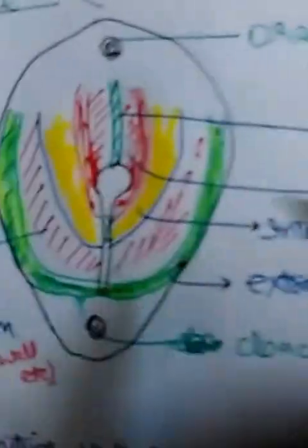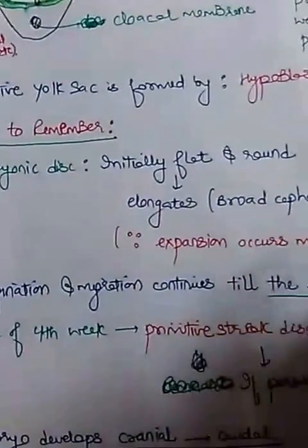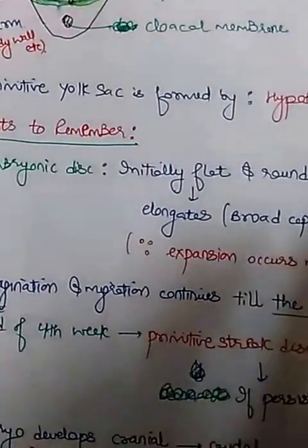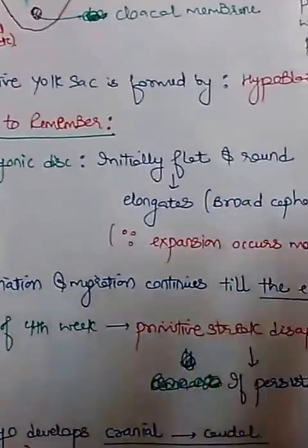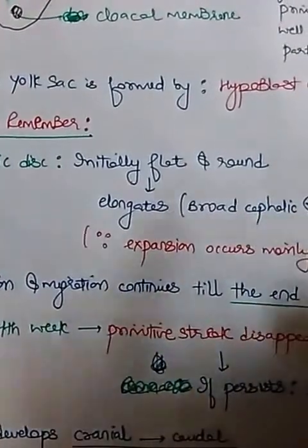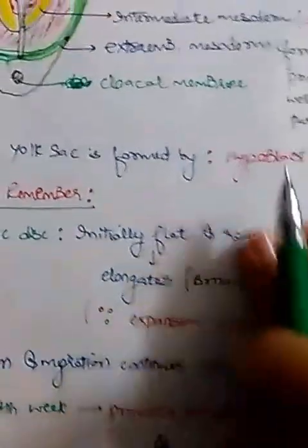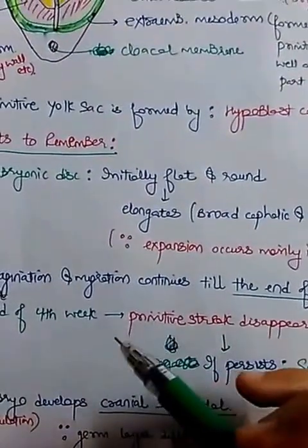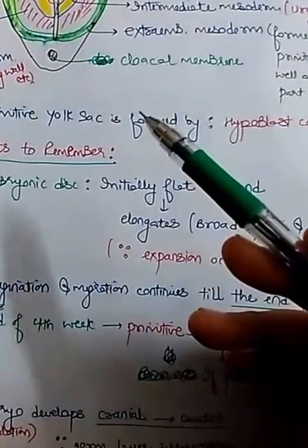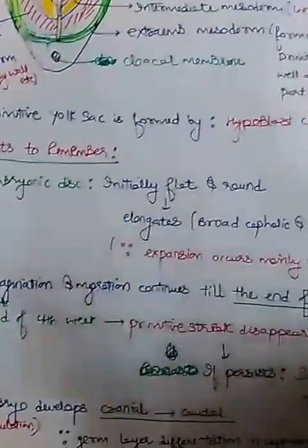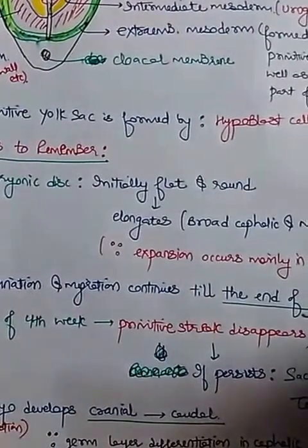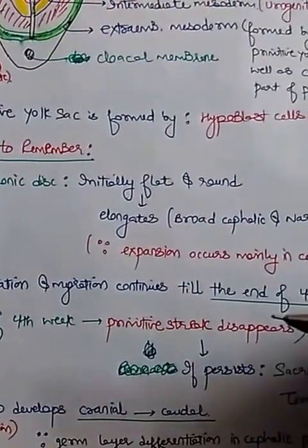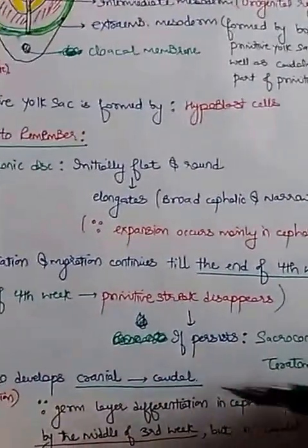The embryonic disc was initially round and flat, but later it elongated and formed a broad cephalic and narrow caudal part, as cells are expanding more in the cranial direction. This invagination and migration of cells continues until the end of the fourth week. At the end of the fourth week, the primitive streak gradually disappears; if it remains, it leads to sacrococcygeal teratoma.